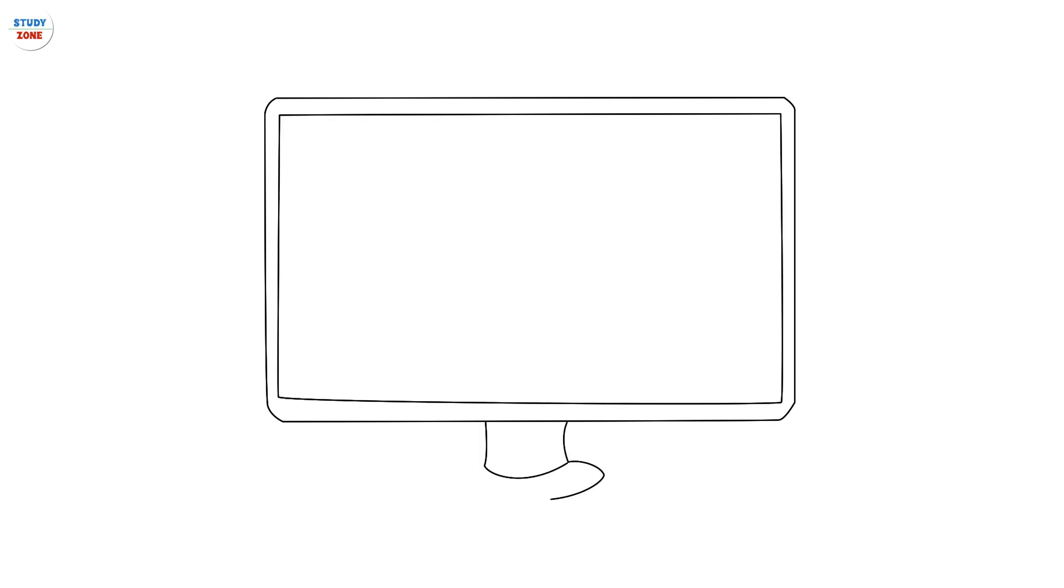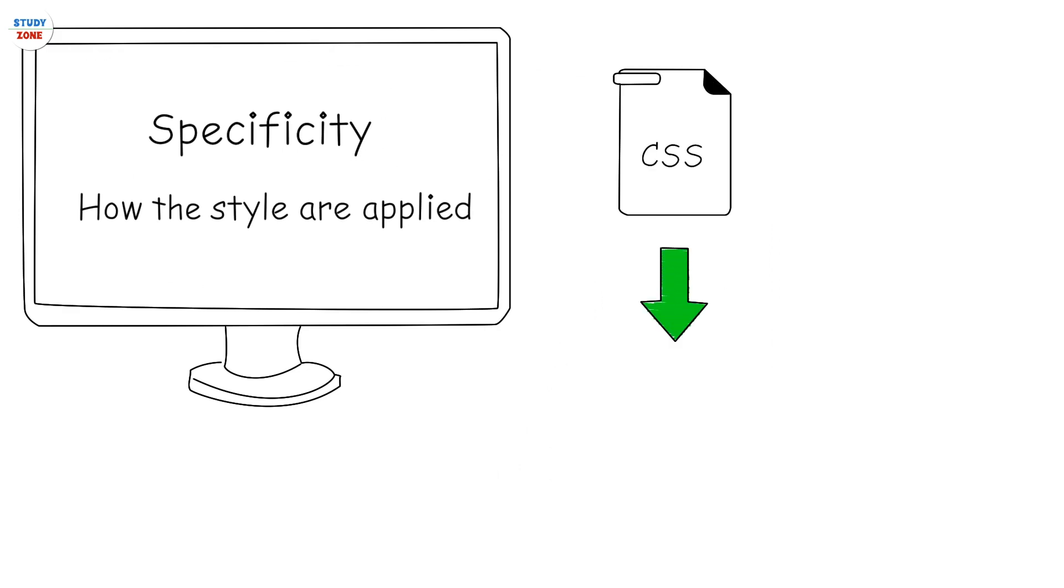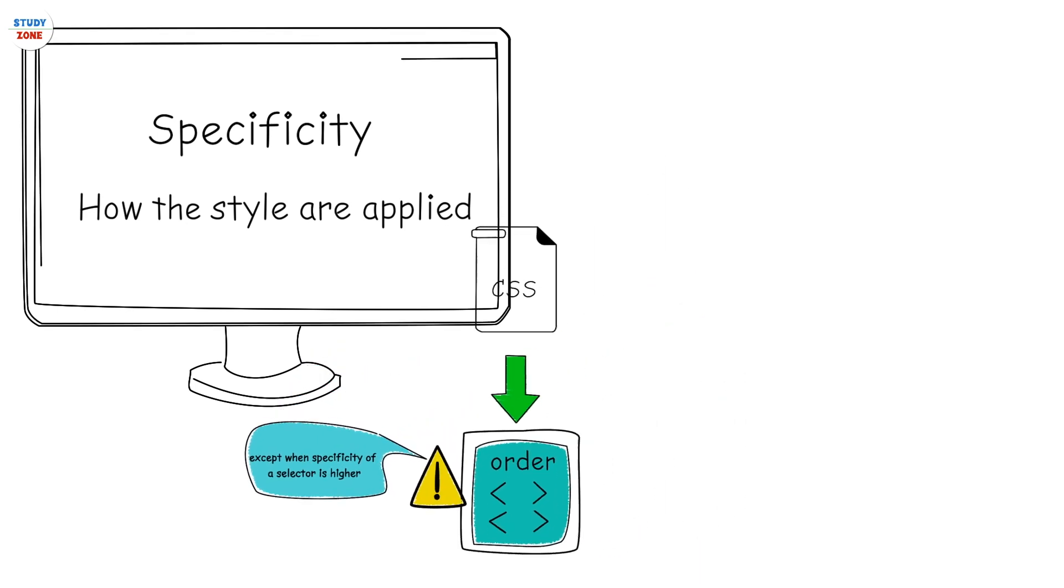In this video we are going to talk about specificity and how styles are applied. CSS applies the styles in the order they are written, except when specificity of a selector is higher.